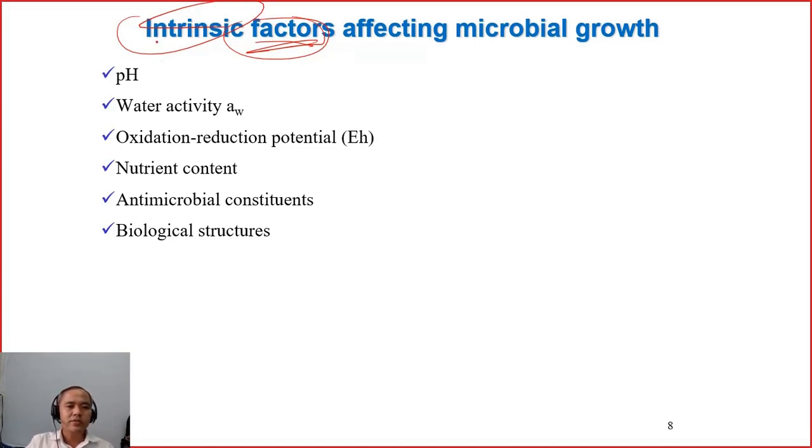The first one, the first intrinsic factor - intrinsic means the factor which belongs to the food. The first one is pH, the second one is water activity, reduction oxidation potential, the nutrient content of the food,